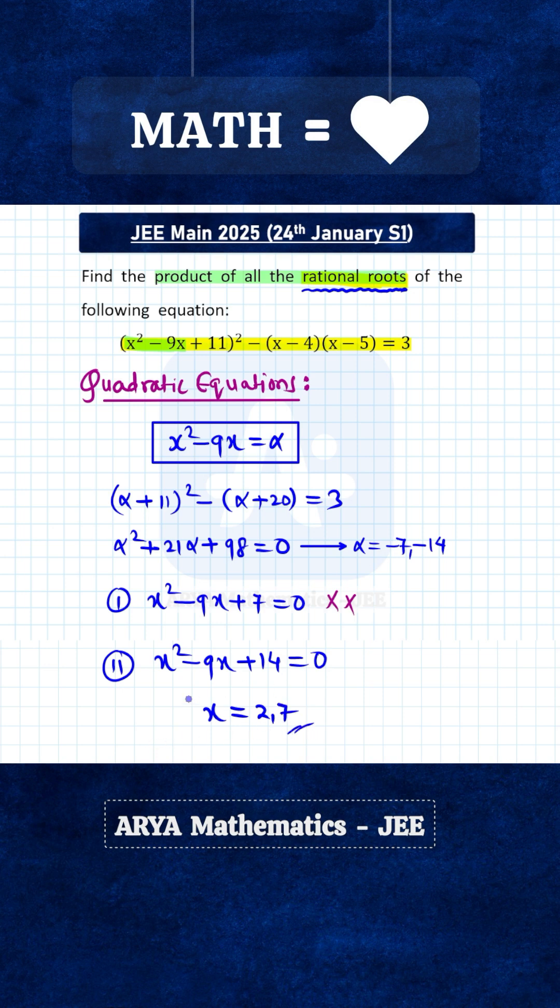These are the only two rational values of x that will satisfy this equation. We have to find product of all the rational roots. So here the product will be 2 into 7, which is 14. That is the correct answer for this problem.